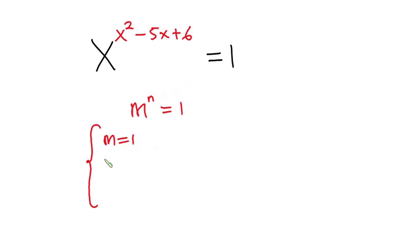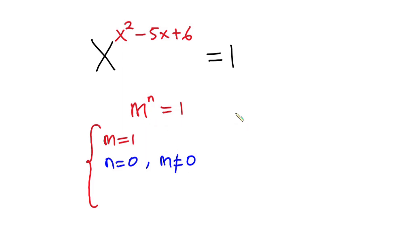Another case is n should be equal to 0 and m should not be equal to 0. Why are we saying m should not be equal to 0? If m is equal to 0, then we have 0 to the power 0, which is indeterminate. So if n is equal to 0, m should never be equal to 0.